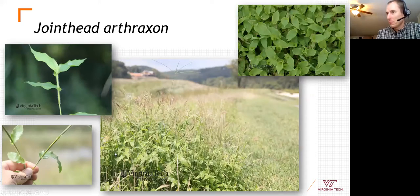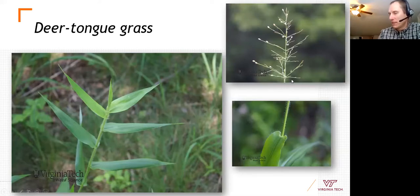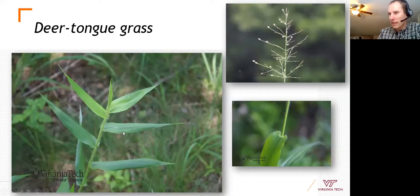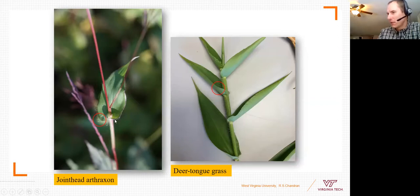Deer tongue grass can sometimes be confused with these warm-season grasses, but it is a perennial with a very different pinnacle-shaped seed head rather than spikelets. Its leaves can reach about seven inches long — it's quite robust. A distinguishing feature from jointhead arthraxon: deer tongue lacks the hairs and the leaf base that clasps around the stem more prominently seen on jointhead arthraxon.